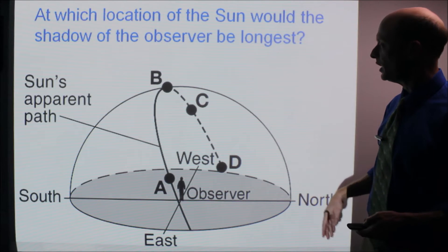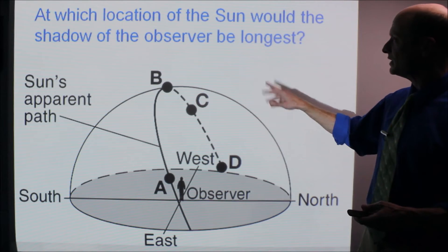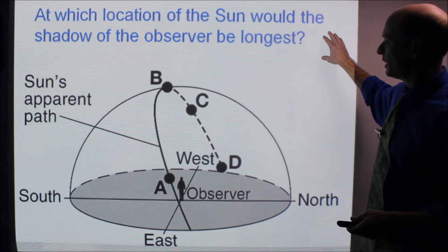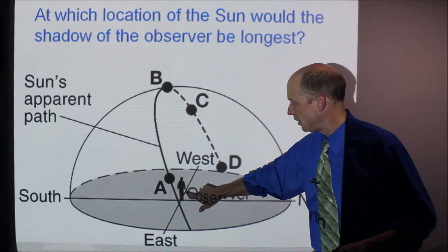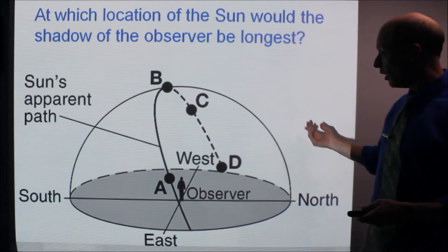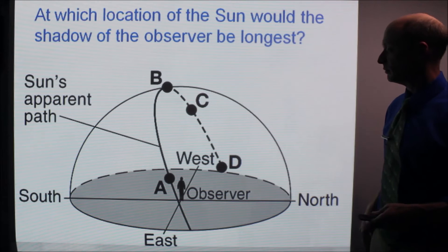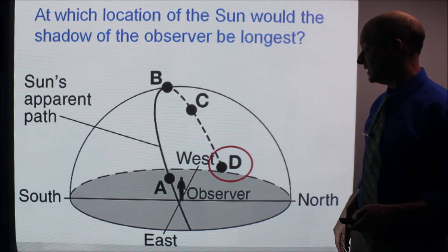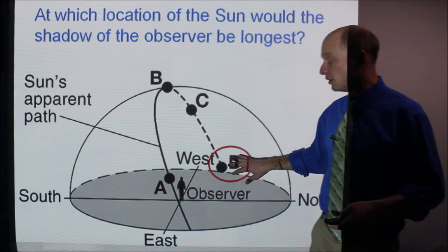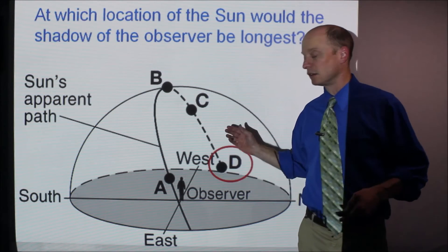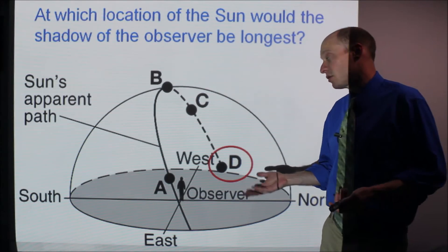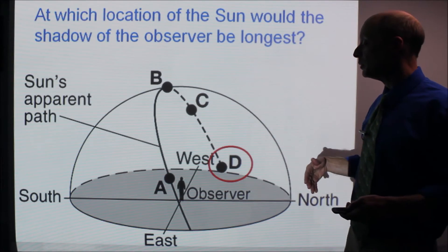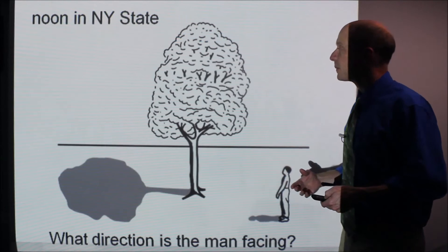Here's a question where you have positions A, B, C, D — at which location of the Sun would the shadow of the observer be the longest? The answer is D. The lower in the sky, the longer the shadow. This is a multiple choice question, and if you know that, it will be a pretty straightforward question.